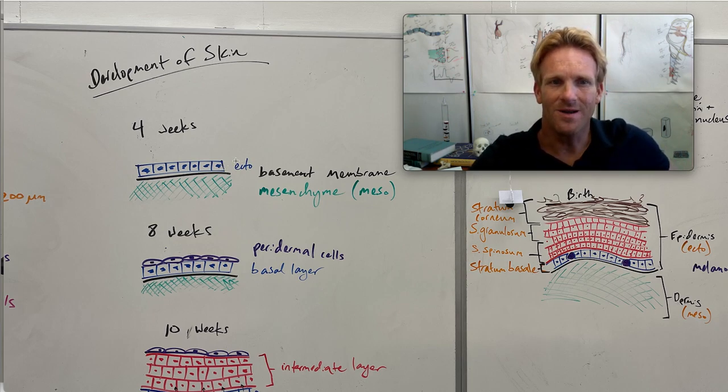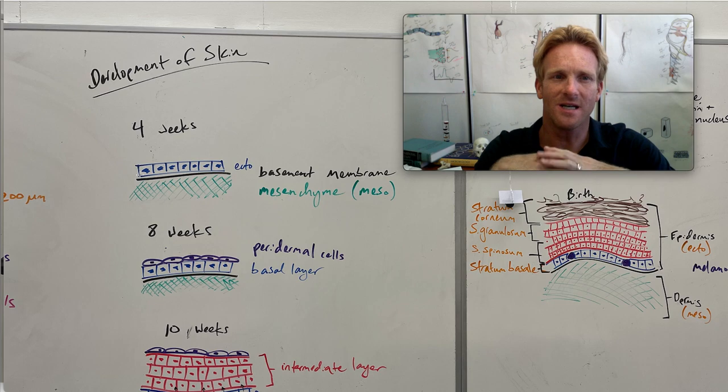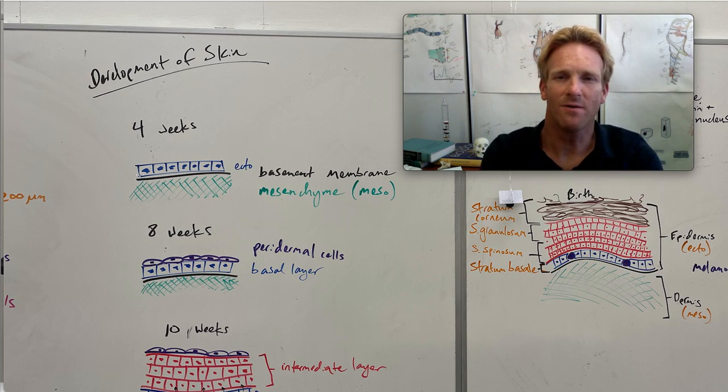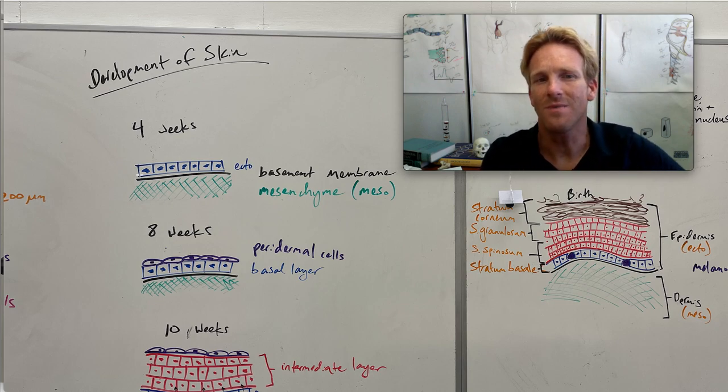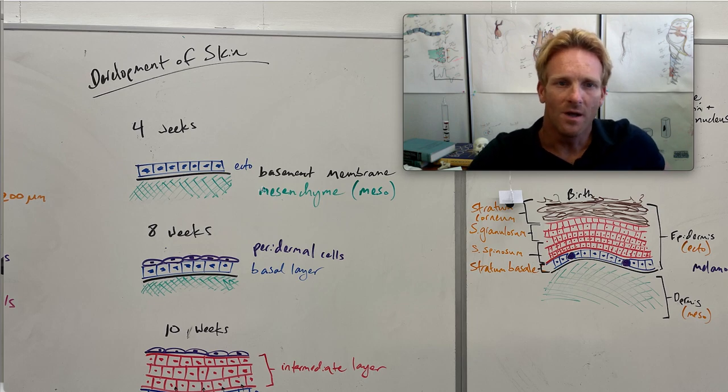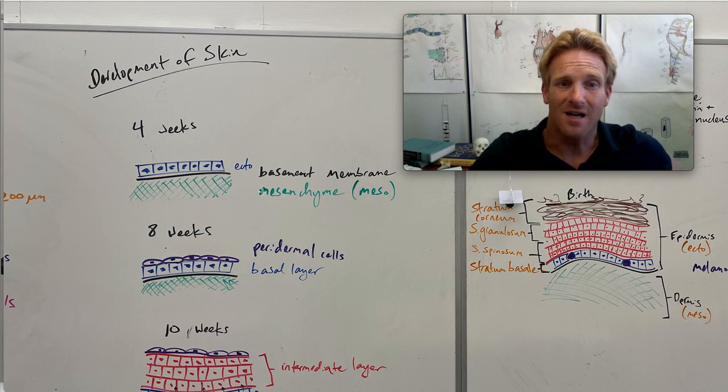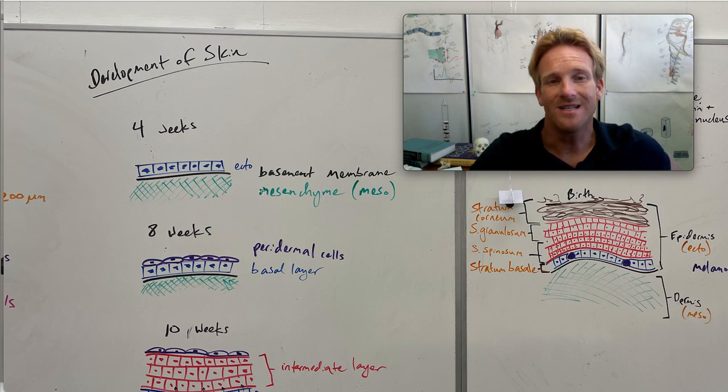Here we have this blue ectoderm layer and then beneath it you have this thin basement membrane, which is a thin layer of interconnected proteins that creates this boundary between the ectoderm and the underlying mesoderm, which is shown in green. This underlying mesoderm is filled with mesenchyme or mesenchymal cells, and that's just a fancy word for mesodermal cells that will go on to become something else. These mesenchymal cells of the mesoderm will go on to become cells of the dermis.